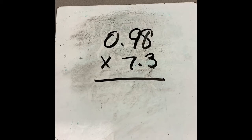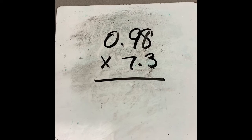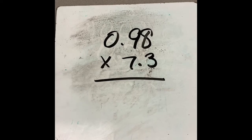All right, everyone. So for number one in our guided practice today, we have 0.98, so a little bit less than one, times 7.3.